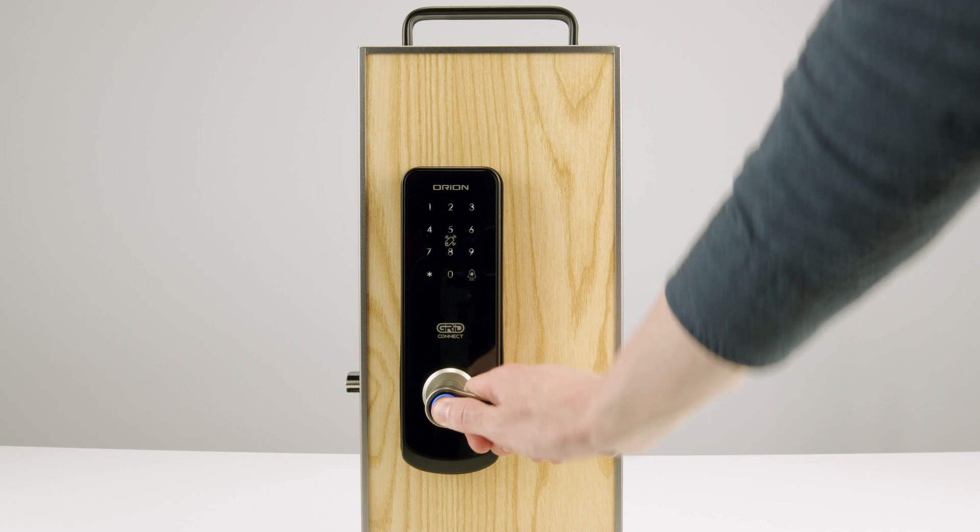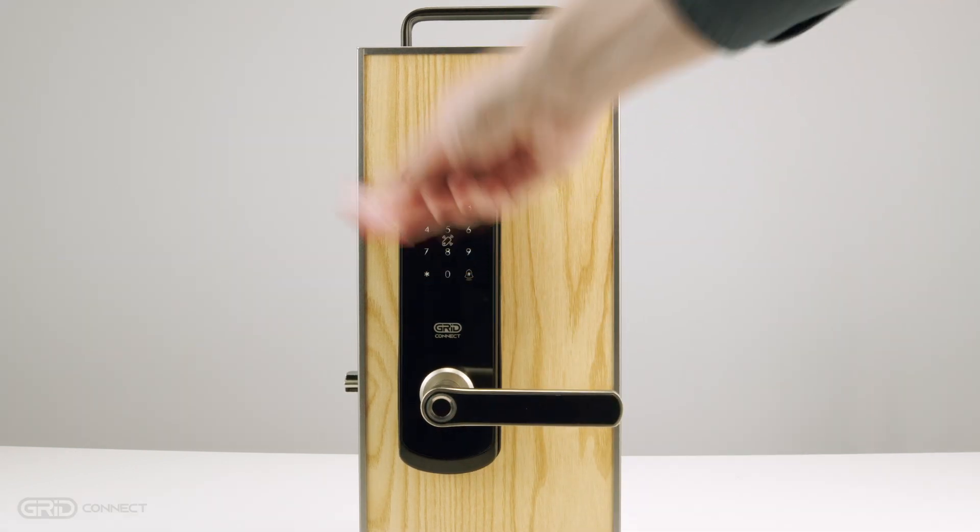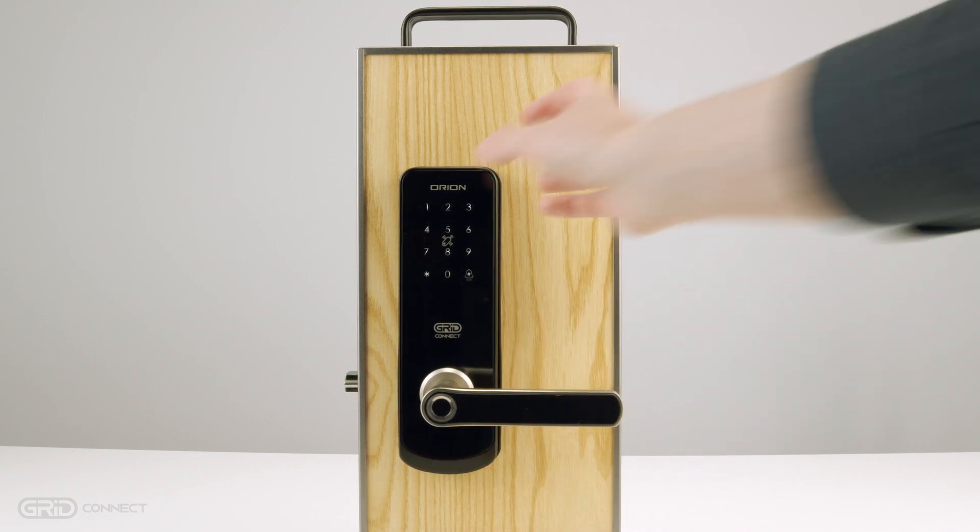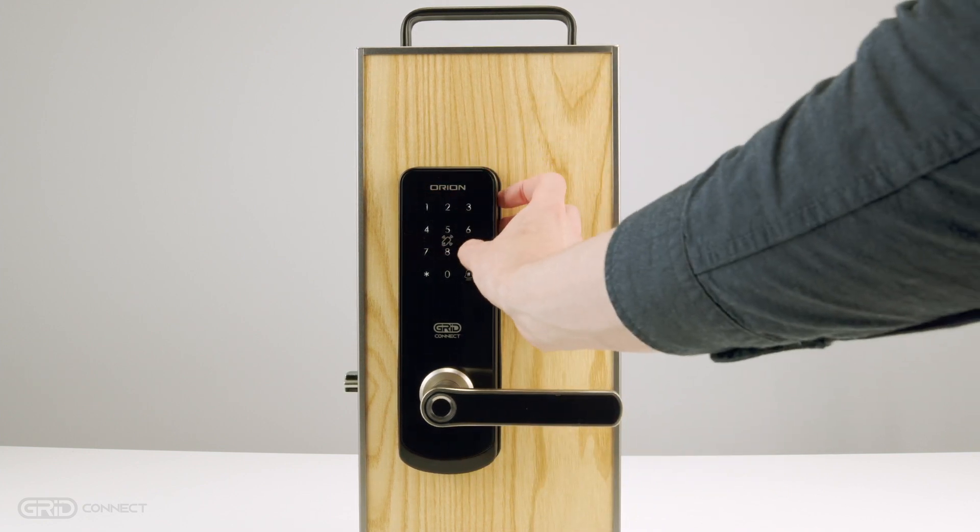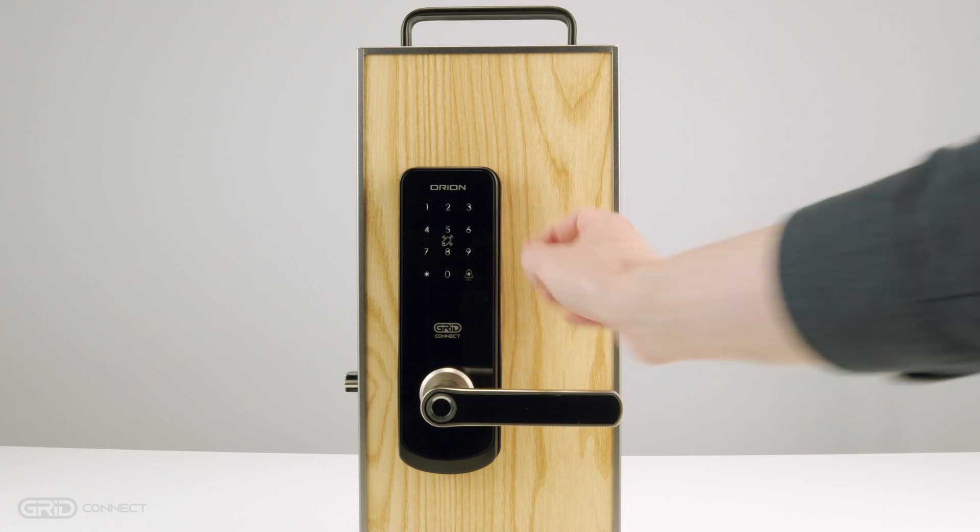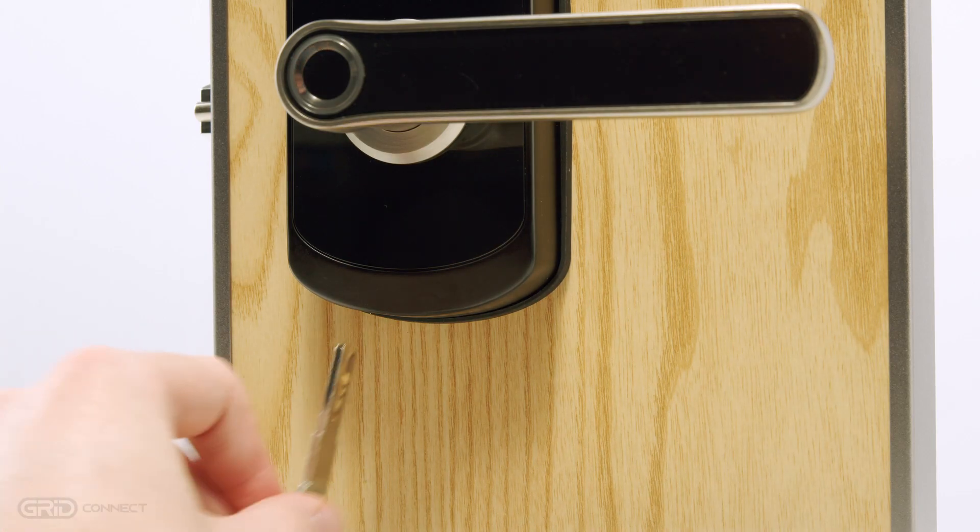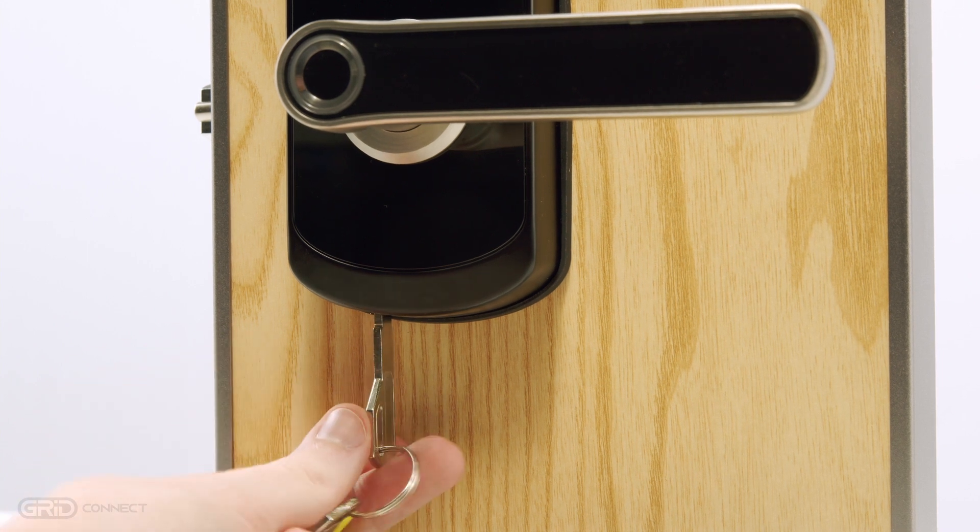Your smart lock can be operated by a fingerprint, RFID tag, or passcode. Each of these must be set up as a separate user on the lock, but they can all be linked to one account in the Grid Connect app, giving you plenty of options to get inside after a long day. There's also a standard key provided just in case.